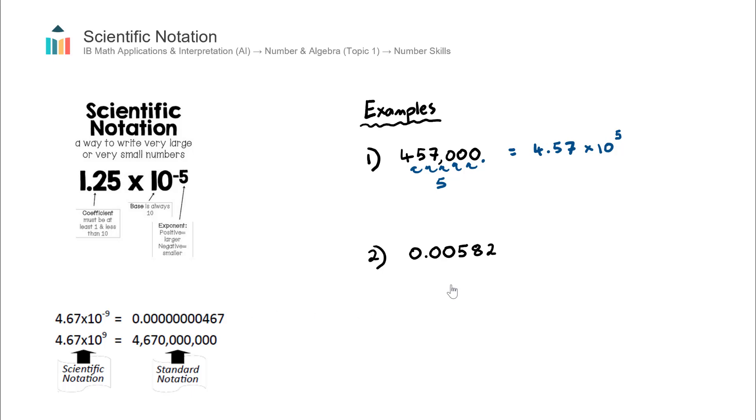Let's try the second example. Again, let's think through how many times does the decimal point need to move in order for this to become a number between 1 and 10, 5.82. Well, it needs to move once, twice, 3 times. So this number becomes 5.82 multiplied by 10 to the power of 3, but it will be a negative 3 because this is a small number.